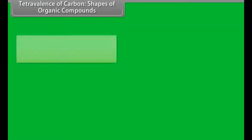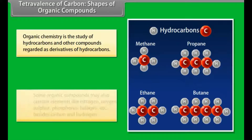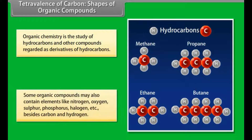Tetravalence of carbon and shapes of organic compounds. Organic chemistry is the study of hydrocarbons and other compounds regarded as derivatives of hydrocarbons. Some organic compounds may also contain elements like nitrogen, oxygen, sulfur, phosphorus, halogen, etc., besides carbon and hydrogen.